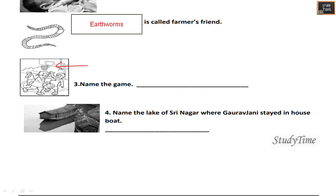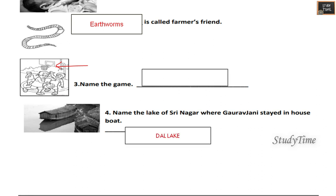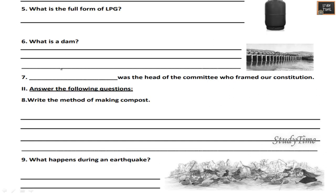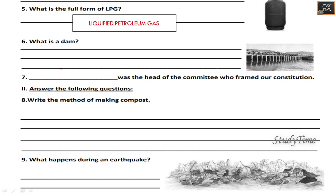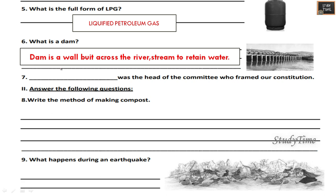Name the lake of Srinagar where Gaurav Jani stayed in a houseboat — it is Dal Lake. What is the full form of LPG? It is Liquefied Petroleum Gas. What is a dam? A dam is a wall built across a river stream to retain water. Dash was the head of the committee who framed our constitution — the answer is Dr. Ambedkar.